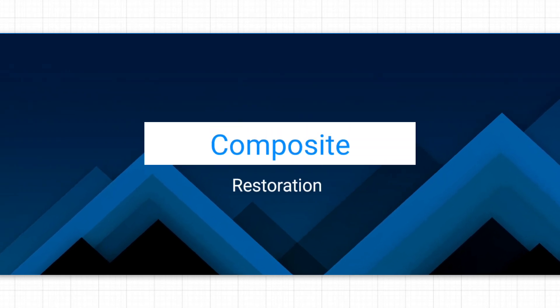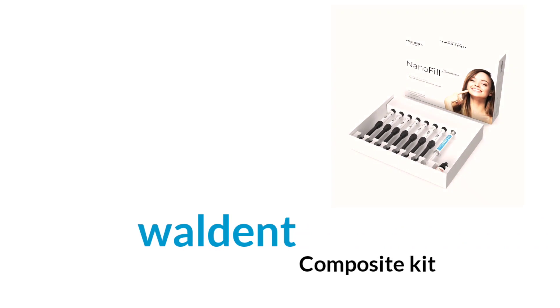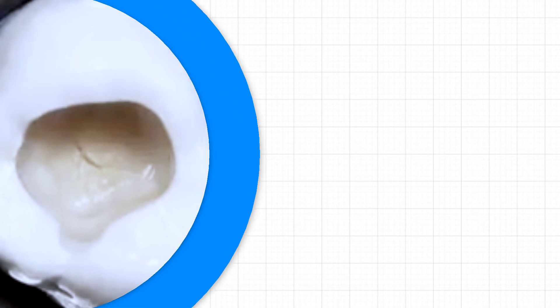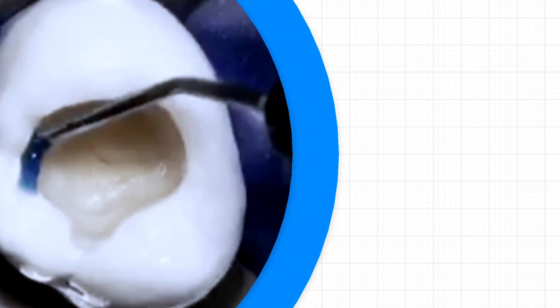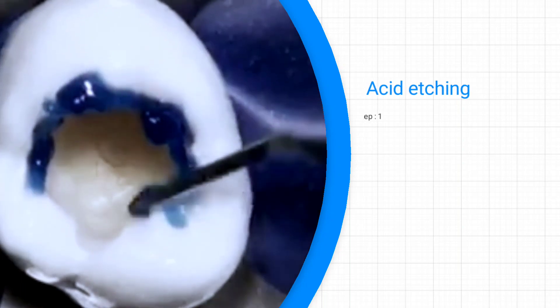Hello everyone, this video is a demonstration of class 1 composite restoration. I'm using Valdent composite kit that I bought from Dental Card. I have already prepared the tooth. After trimming the tooth, you start the bonding process.